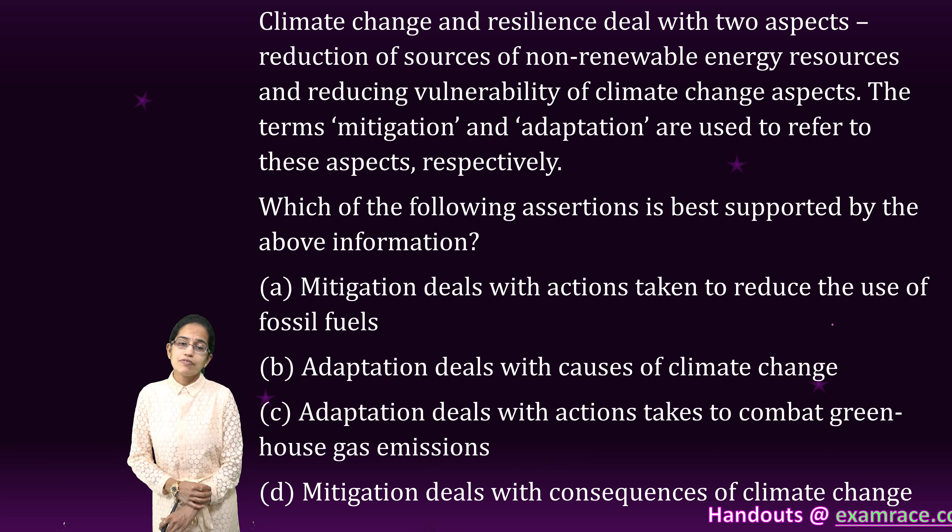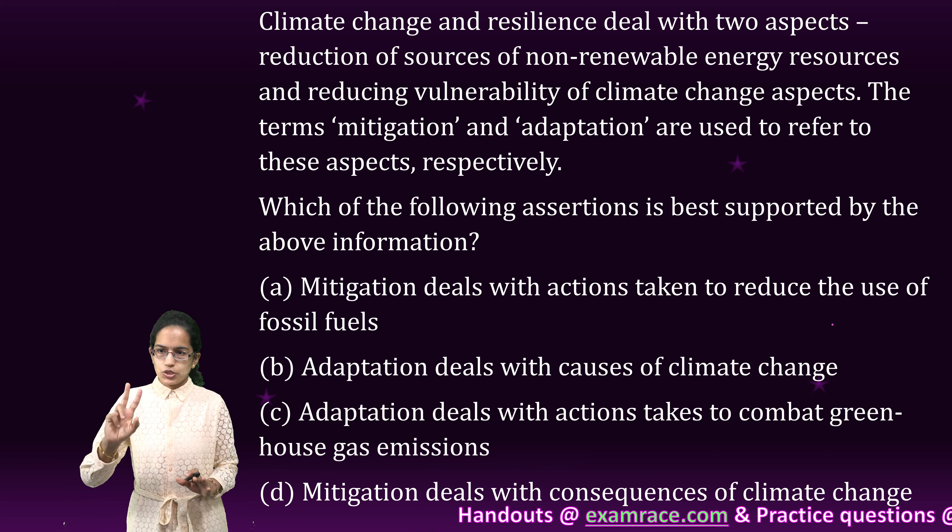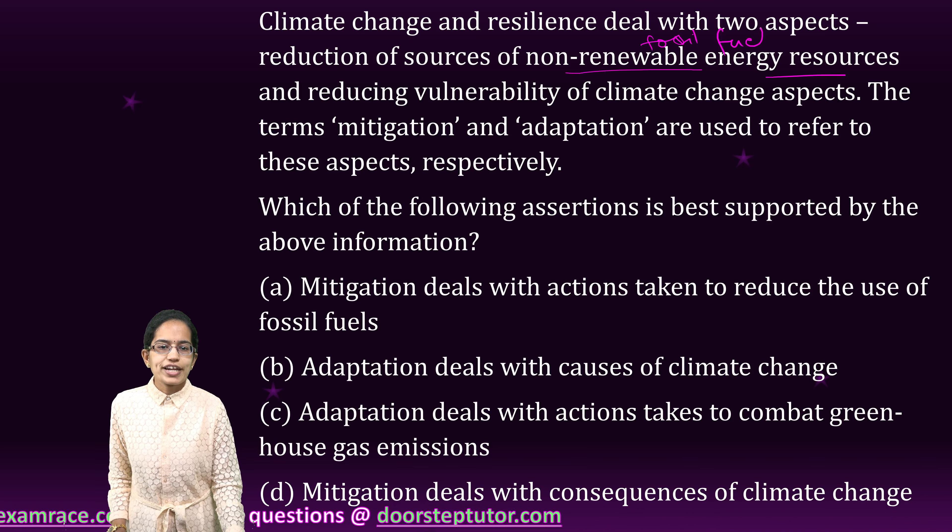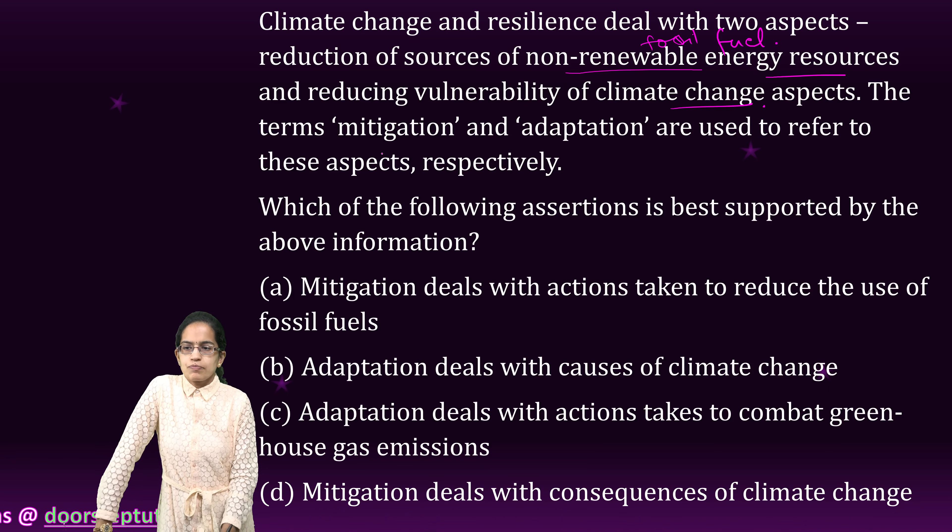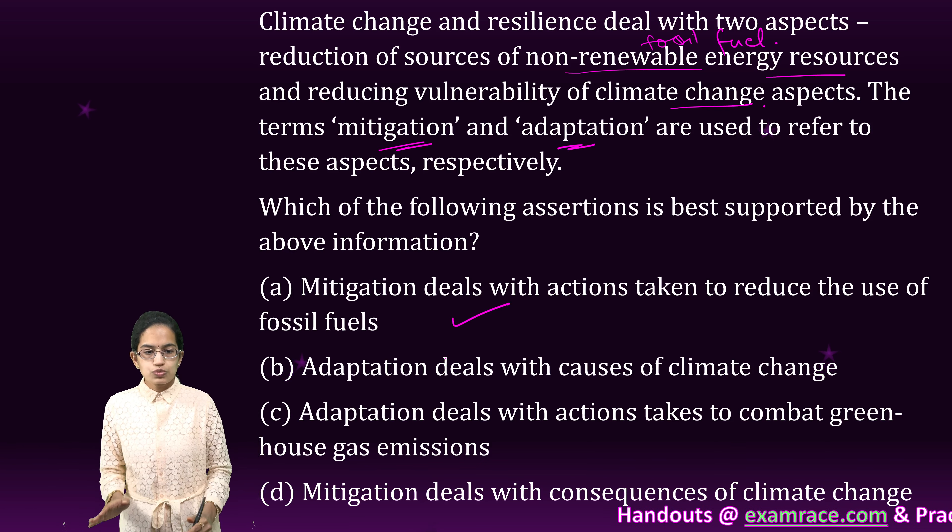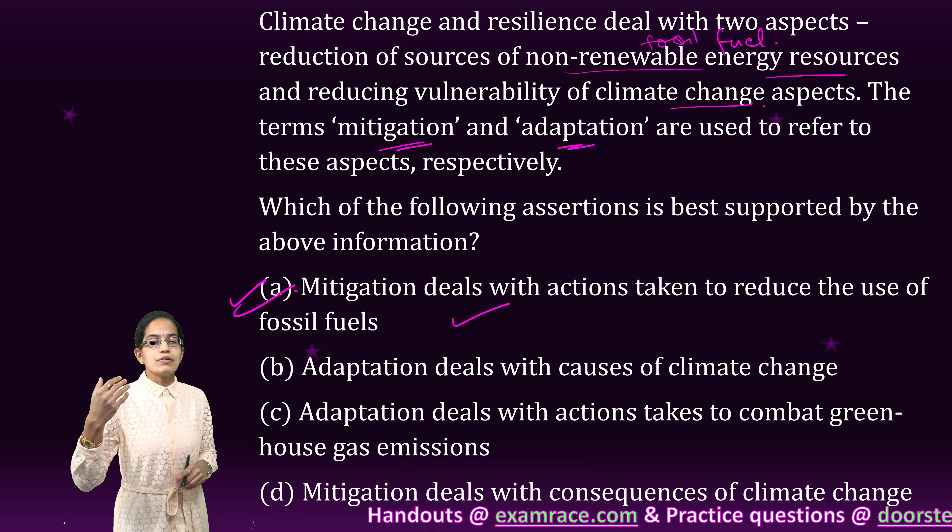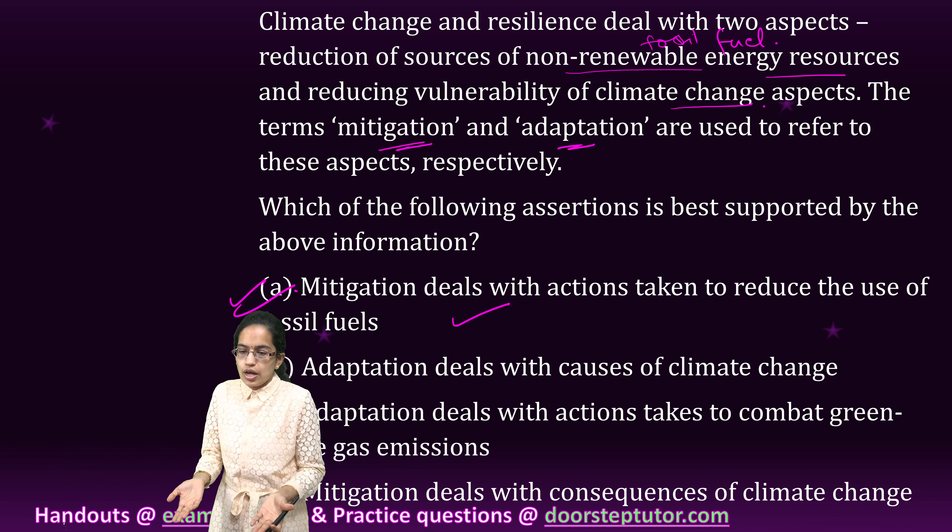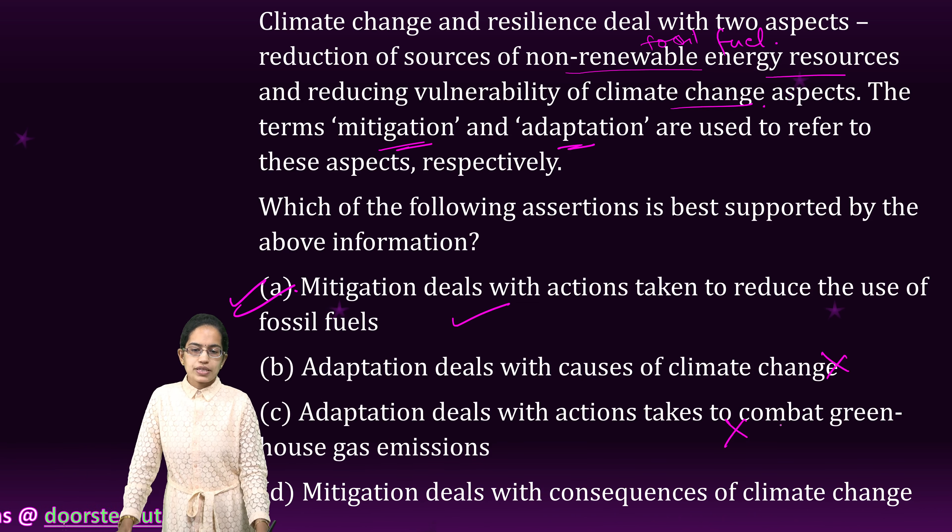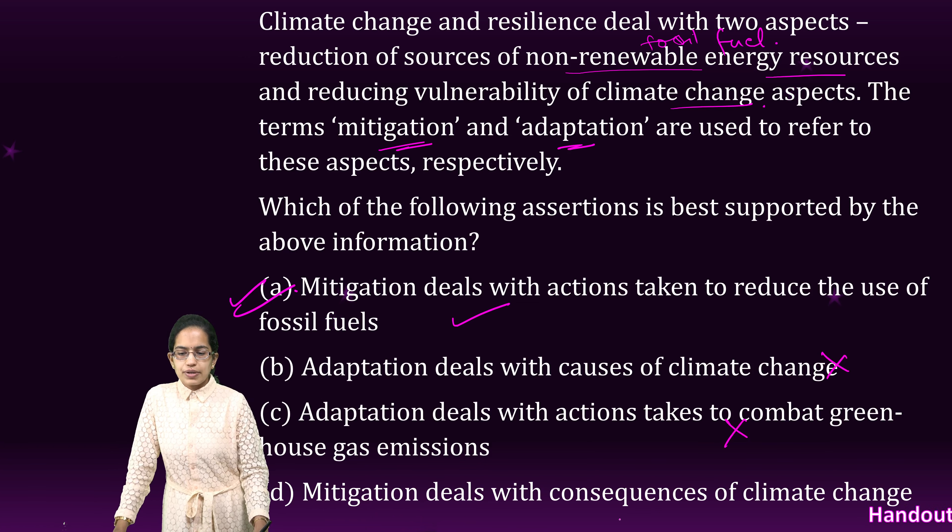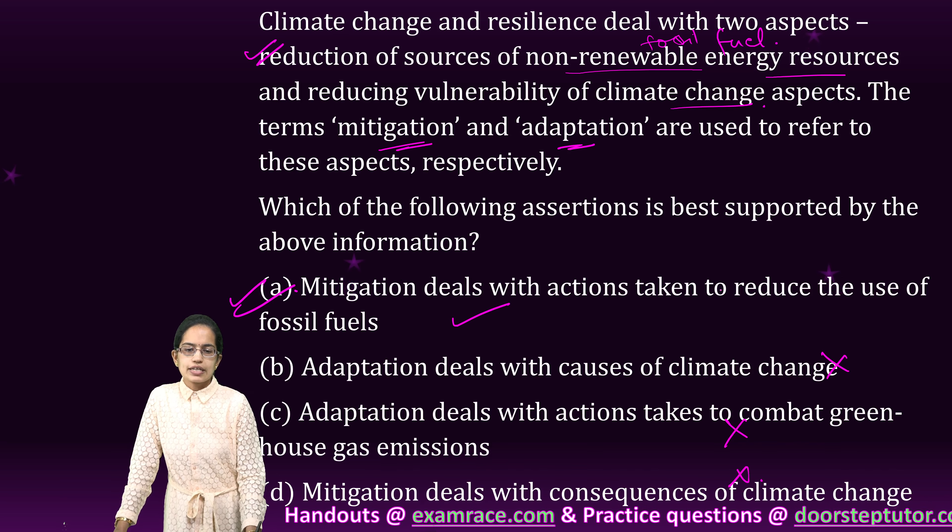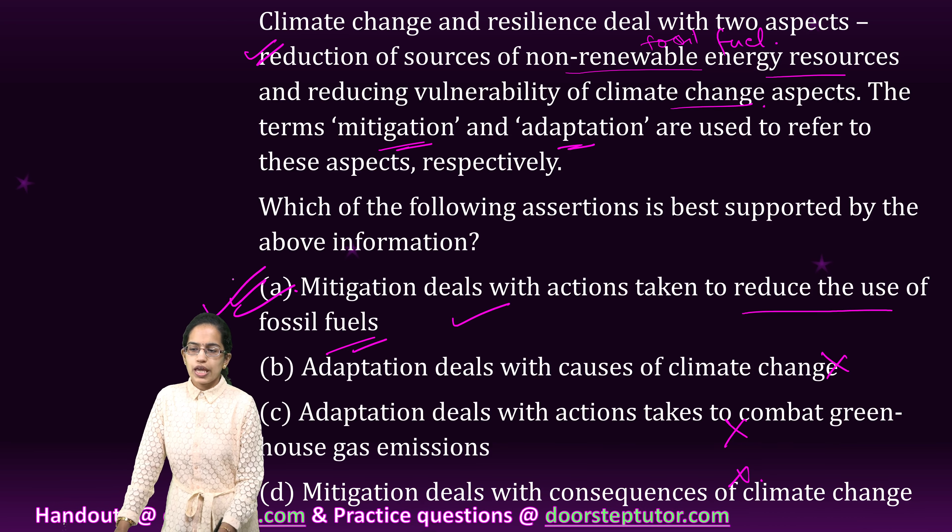The next question is very simple, very interesting. Climate change and resilience deal with two aspects: reduction of the source of non-renewable energy sources, that is fossil fuels simply put to avoid any complicated language, and reduce the vulnerability of climate change. So we use mitigation and adaptation. Mitigation is where we are trying to deal with the actions to reduce the use of fossil fuels, that is correct. And adaptation is once it has already happened, we try to adopt ourselves. So adaptation deals with causes? No. It deals with the action to combat? No. Combat means to again do something. So it is mitigation. And mitigation deals with the consequence of climate change? No. So it clearly says reduction of sources of non-renewable energy resource, that is reducing the use of fossil fuels. So A becomes the right option.